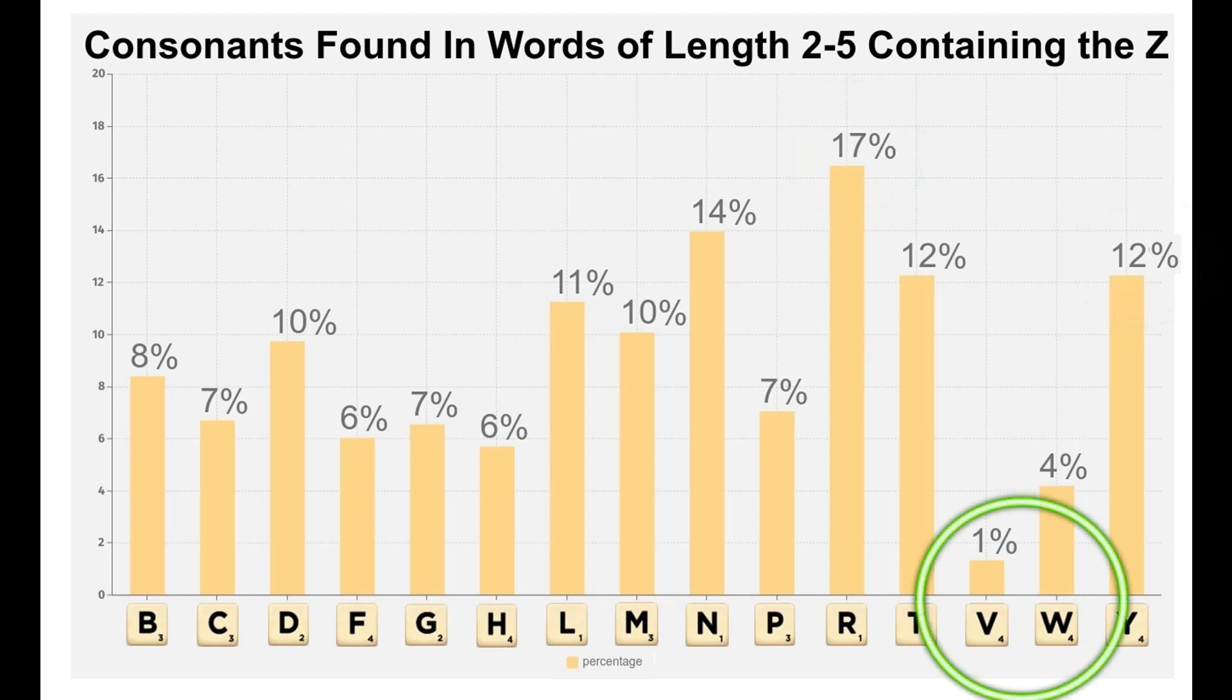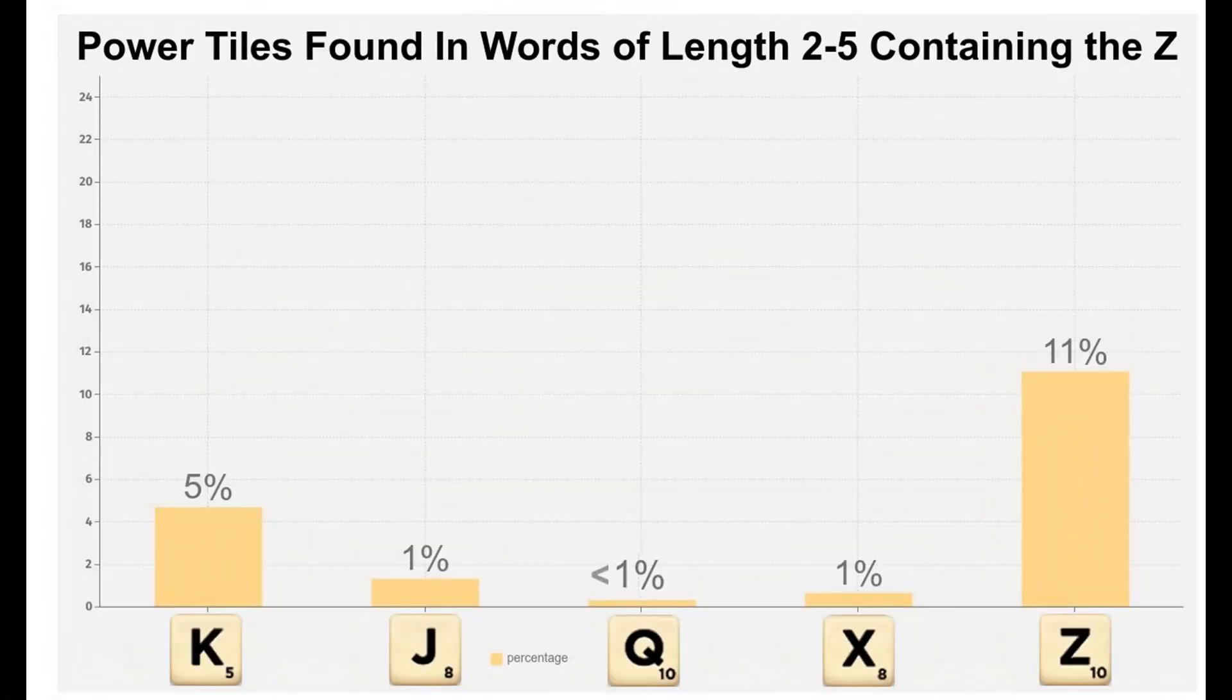Notice the very low percentages for both the W and especially the V, two tiles that do not work well with the Z.